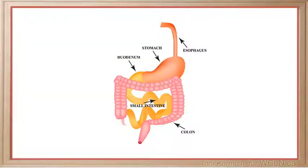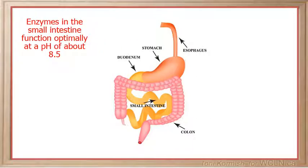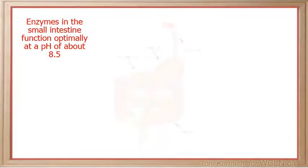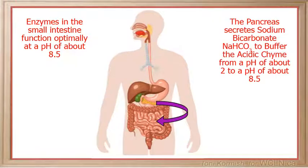Enzymes in the small intestine function optimally at a pH of about 8.5, so the acidic chyme entering the small intestine must be buffered. The pancreas secretes a buffer called sodium bicarbonate into the small intestine to buffer the acidic chyme from a pH of about 2 to a pH of around 8.5.